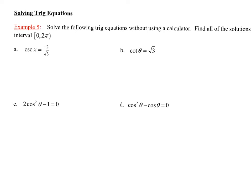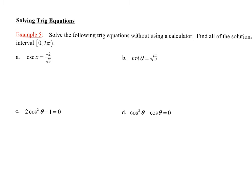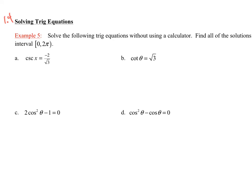Hi, this is 1.4 continued, and we have 1.4, and we want to go ahead and solve equations, solve a trig equation. So if I look at A, I have cosecant of x is equal to negative two over the square root of three.